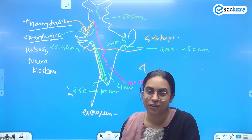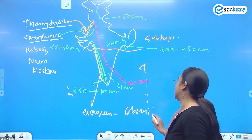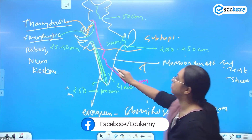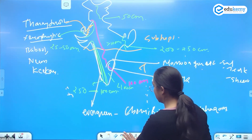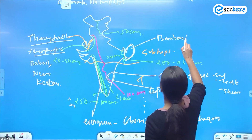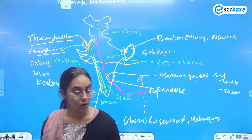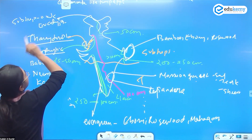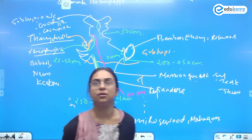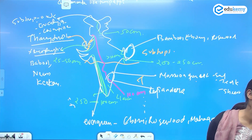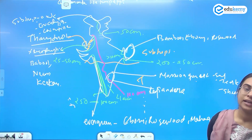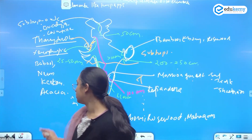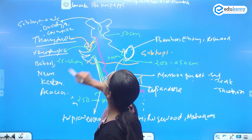In the evergreen zones, we have rosewood and mahogany. Moving on, you can show the monsoon forest with sal, teak, shisham, sandalwood, and red sandalwood. Also bamboo, ebony, and rosewood. Additionally, show mangrove forest along the coasts. For subtropical areas, write about oak, eucalyptus, and chir pine. So India has a variety of vegetation — evergreen, tropical, subtropical — all depending on precipitation and temperature.